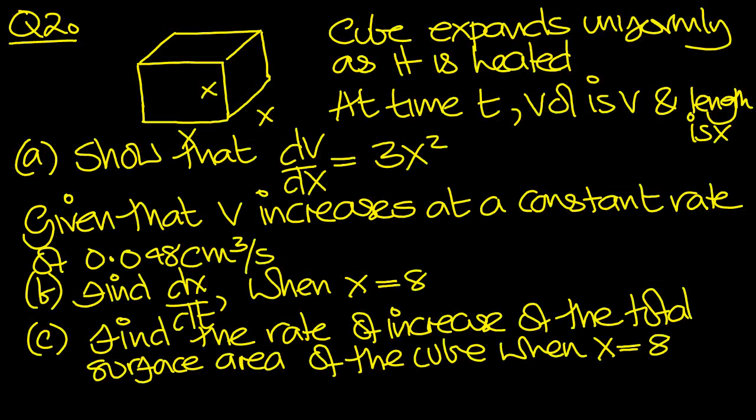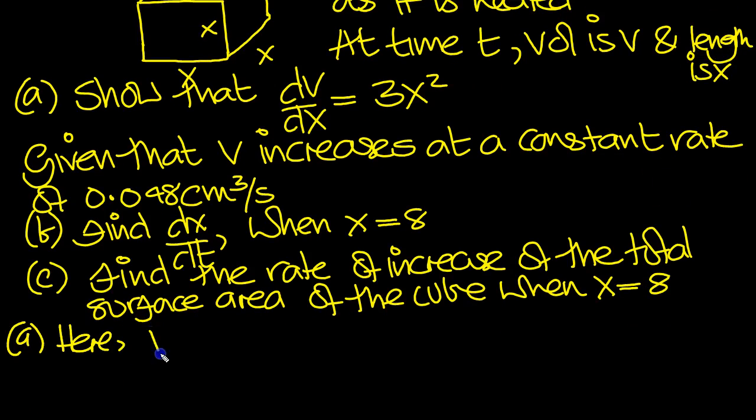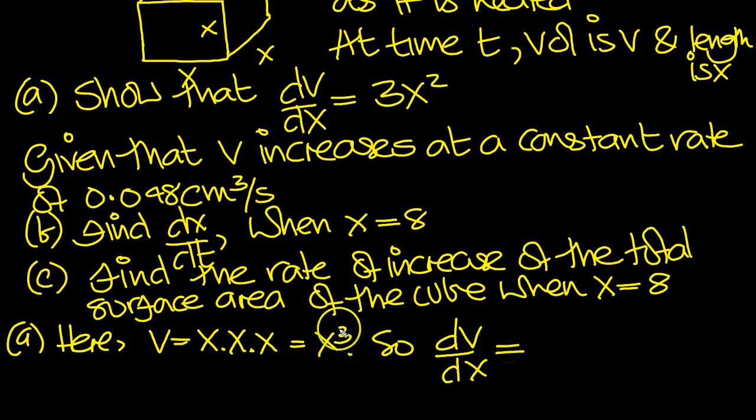So I'll look at this then. Part a, the volume of the cube is length times breadth times height, which is x cubed. So dv/dx then, differentiate with respect to x using the power rule: 3x squared. That's part a.